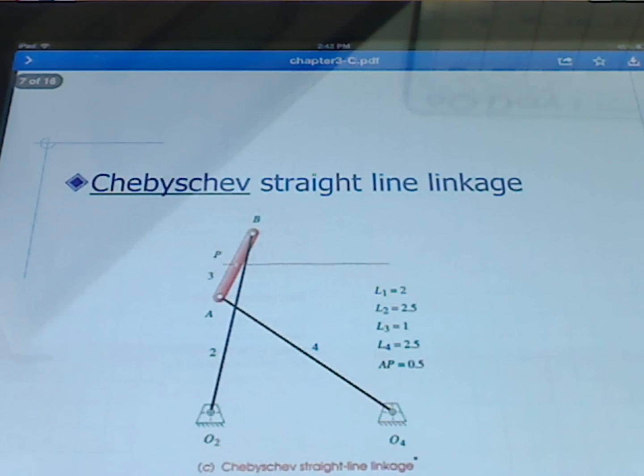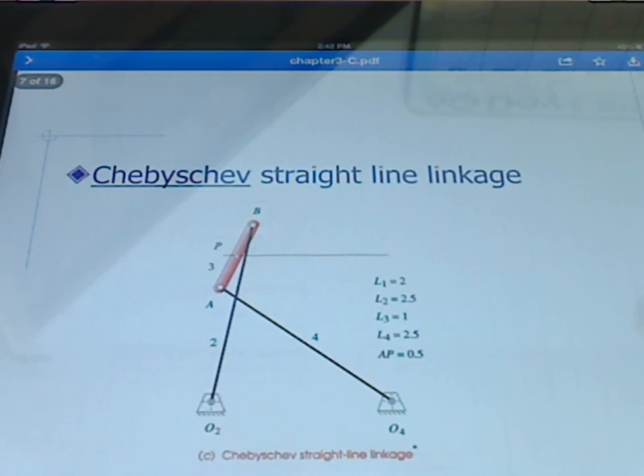Here we have the Tchebicheff straight line linkage. And its coupler point follows a straight line which is way up here quite a bit above the ground link.